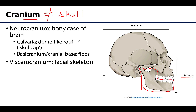The neurocranium includes the calvaria — the skull cap — which provides superior protection, and the basacranium, which is the cranial base where the brain sits. We're going to focus on the neurocranium in this particular lecture, starting with its most anterior bone: the frontal bone.